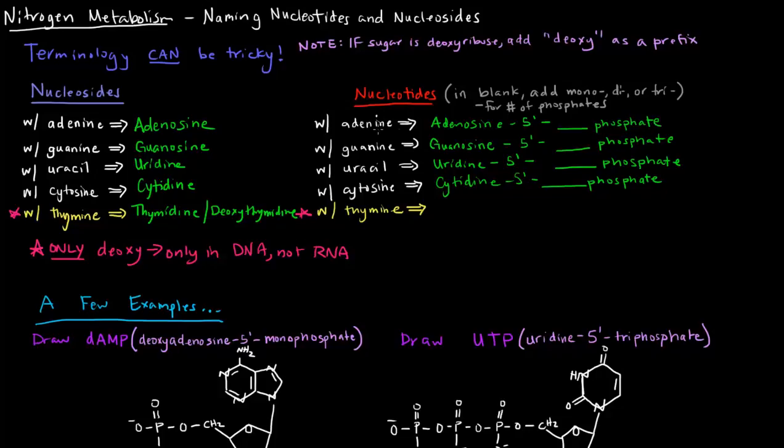So if you had adenine attached to ribose, and you had one phosphate group at the five prime end, it would be adenosine, named for the nucleoside. If it only had one phosphate at the five prime end, it would be called monophosphate. If it had two, it would be diphosphate, so adenosine five prime diphosphate, or adenosine five prime triphosphate if there are three phosphates. It's the same thing for these other ones. You just give it the nucleoside name, then five prime, and then however many phosphates there are.